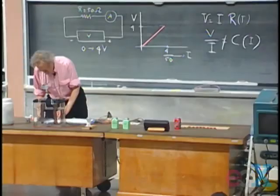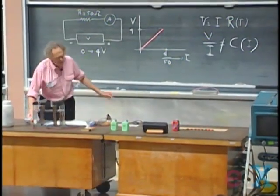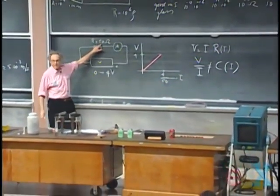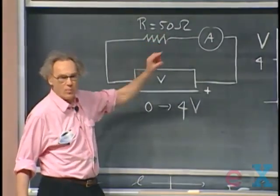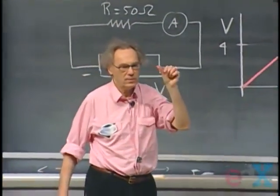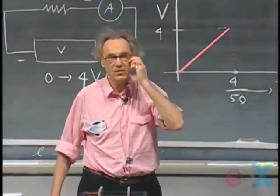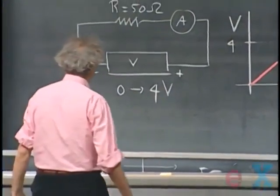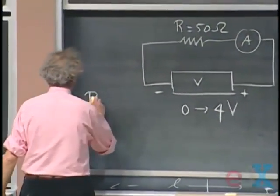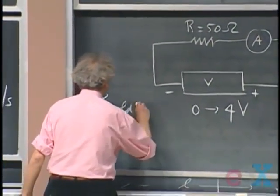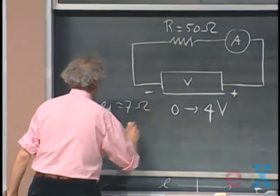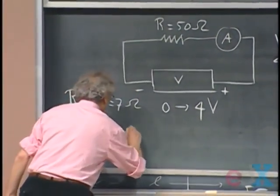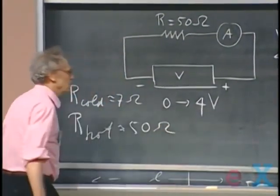And so I want to show you that if I do the same experiment that I did here, but if I replace this by a light bulb of fifty ohms, it's a very small light bulb. Resistance, when it is hot, is fifty ohms. When it is cold, it is seven ohm. So our cold of the light bulb is roughly seven ohms, I believe. But I know that when it is hot, it's very close to the fifty ohms. I think it's a little lower.